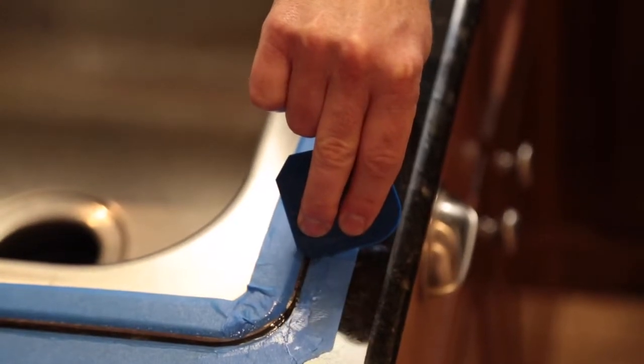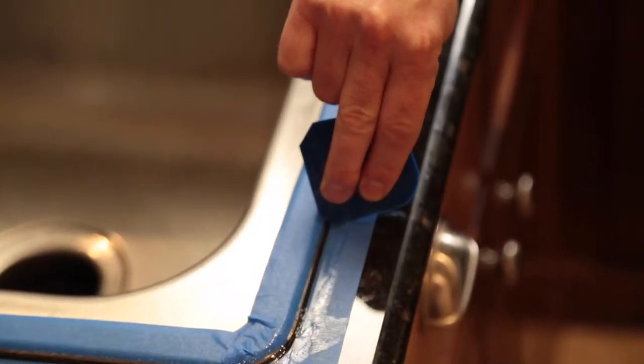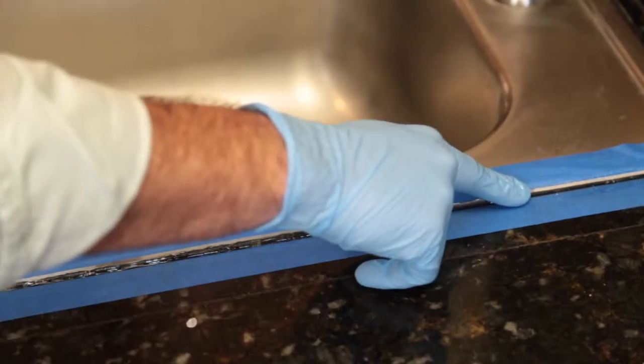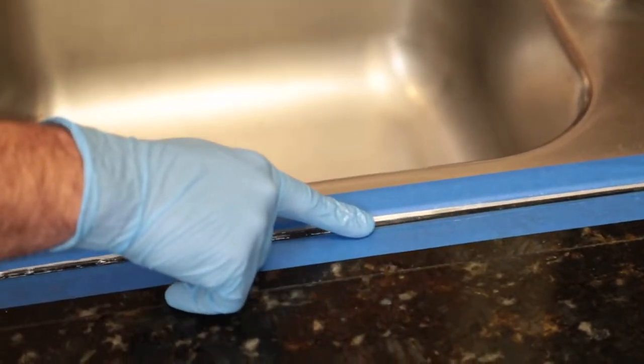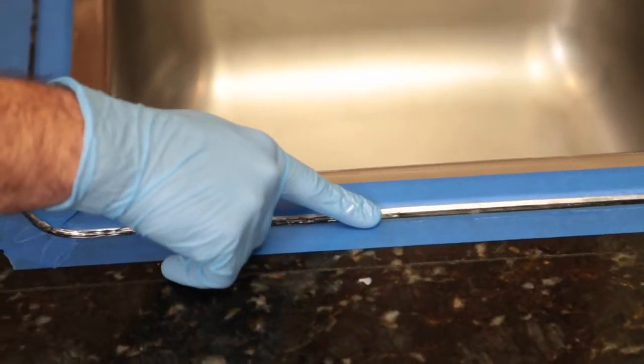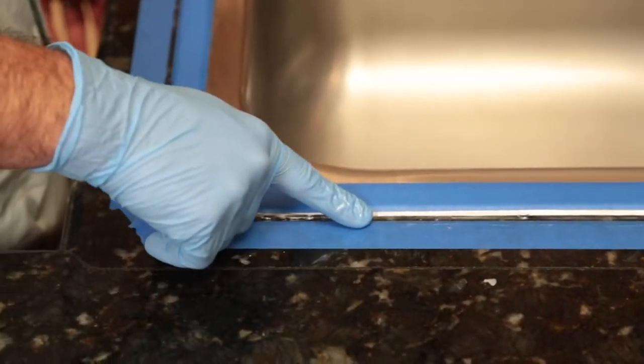After the sealant has been applied, smooth the bead with a caulk finishing tool or your finger dipped in water. This pushes the sealant further into the seam and also gives a nice finished appearance. Do this before the caulk starts to skin over, which is about 2 to 5 minutes.